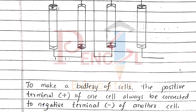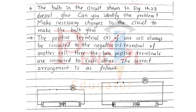Fourth question, the bulb in the circuit shown in figure 14.23 does not glow. Can you identify the problem? Make necessary changes in the circuit to make the bulb glow. The positive terminal of one cell must always be connected to the negative terminal of another cell. Here the two positive terminals are connected to each other. The correct arrangement is as follows.